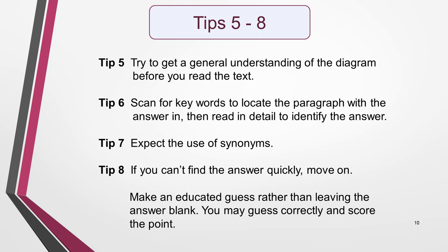Tip 5: Try to get a general understanding of the diagram before you read the text. Tip 6: Scan for key words in the text to locate the paragraph with the answers in them, then read in detail to identify the word or words needed for the label. Tip 7: The information in the text that contains the answer will very likely include synonyms, so be on the lookout for them. Tip 8: If you're struggling with a particular label, move on. Grab the easiest marks first and come back to relook at the others later if there's time. Make an educated guess if you have to, rather than leaving the answer blank — you may guess correctly and score the point. If you're choosing words from a word list, it will be easier to determine the answer when you've eliminated some of the other words.